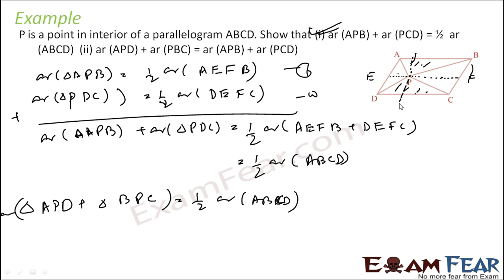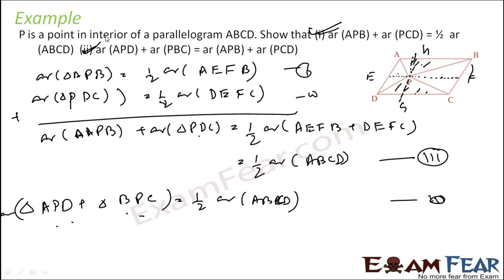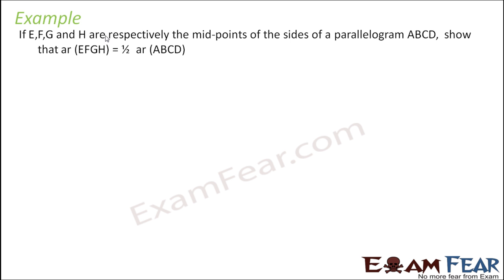Similarly, this triangle and this triangle area is equal to half of AD. We can do that: area of triangle ADB plus triangle ADC equals half of AC, which will be equal to half of parallelogram ABCD. So area of this plus this is 0.5 of area of ABCD, and area of this plus this is also 0.5 of area of ABCD. Thus, from equation 3 and equation 4, the sum is half of area of ABCD.